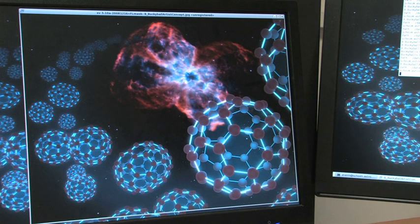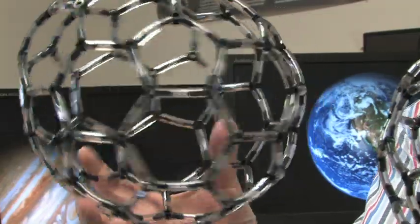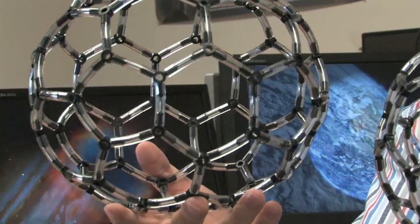We discovered buckyballs in space. Buckyballs are these microscopic particles made of carbon that are arranged in a very specific pattern of pentagons and hexagons, which gives them the shape of a soccer ball. Actually, it looks pretty much like a soccer ball.